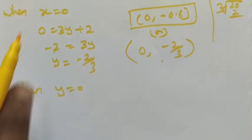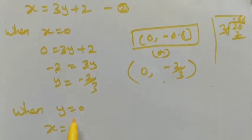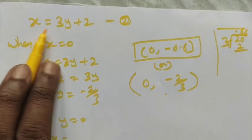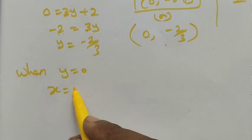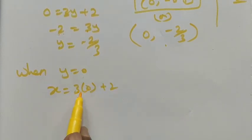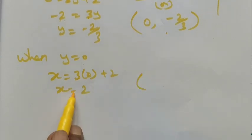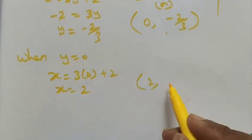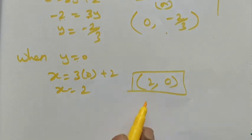When y = 0 in x = 3y + 2: x = 3(0) + 2 = 2. The ordered pair is (2, 0). We have now found all four ordered pairs for the two equations.